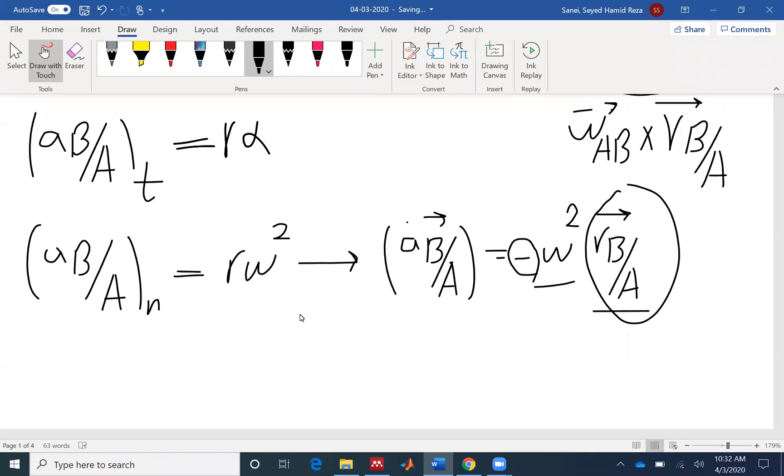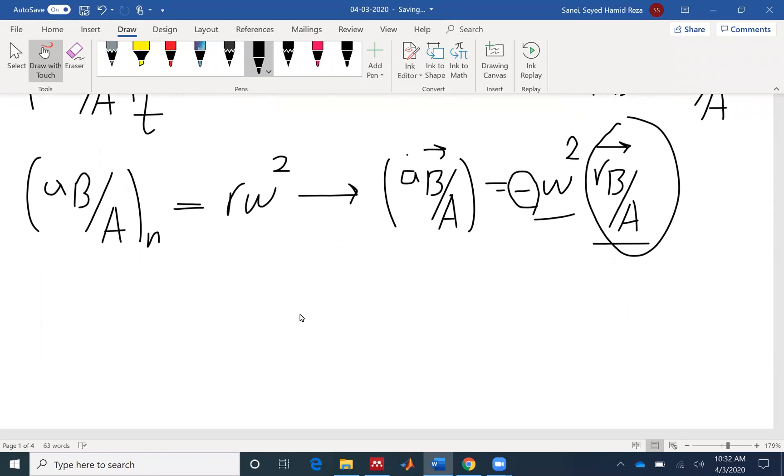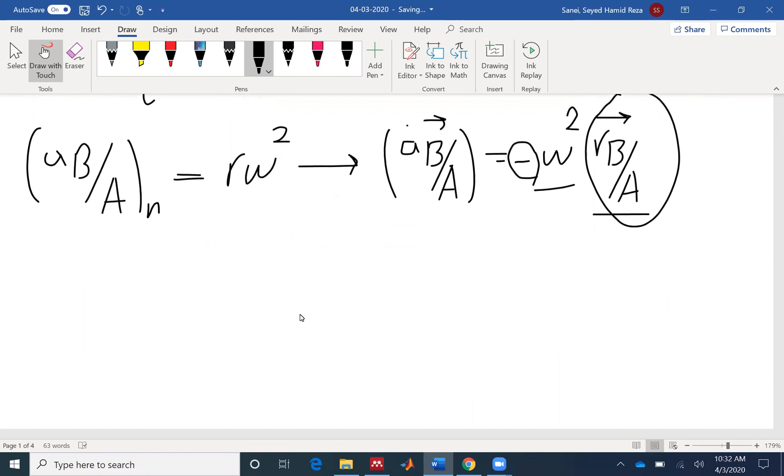And in some problems, it's very difficult to identify the direction of omega and alpha. So direction of omega and alpha could be assumed. And if you find a negative value, which means that the direction that we assumed is incorrect.